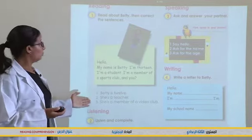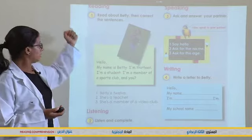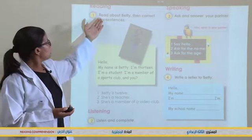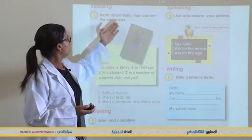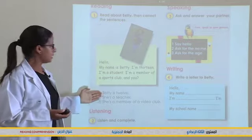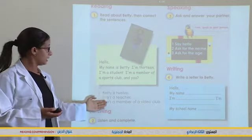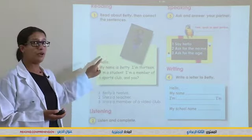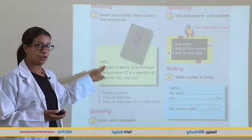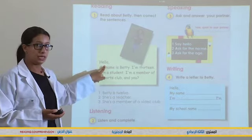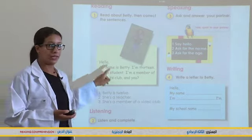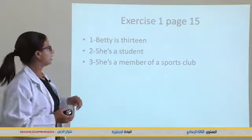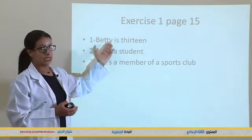Let's move to exercise number one. Read about Betty, then correct the sentences — these sentences are false, you correct them from the text. Okay, take one minute and then we correct.